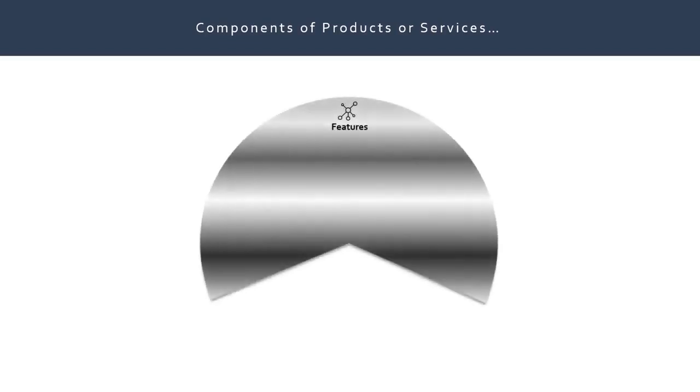Having understood the concept of need, want and demand, let us move to the components of products and services. The first component of any products or services are its features. Features are functional in nature and can always be said as an outer cover of a product.